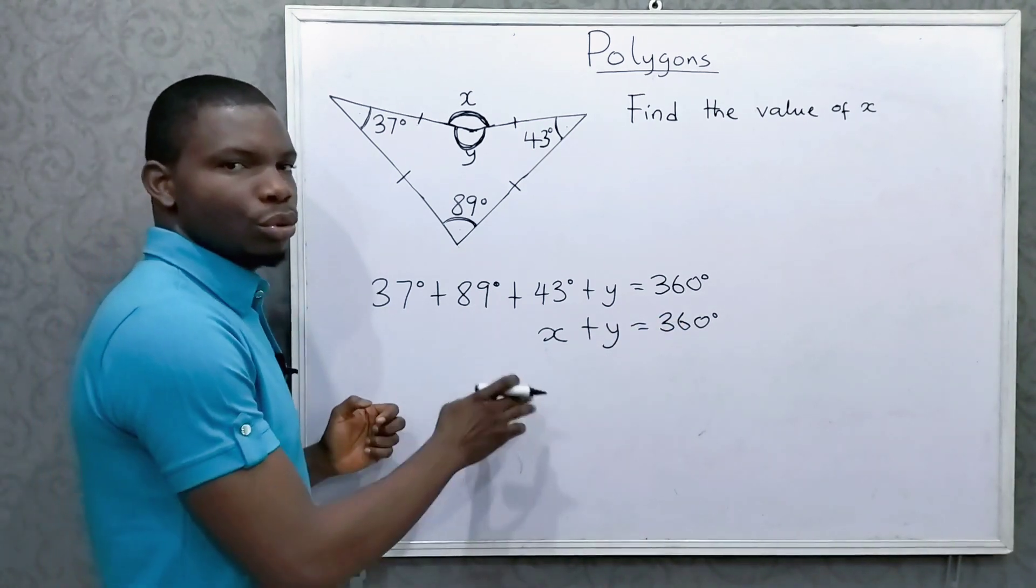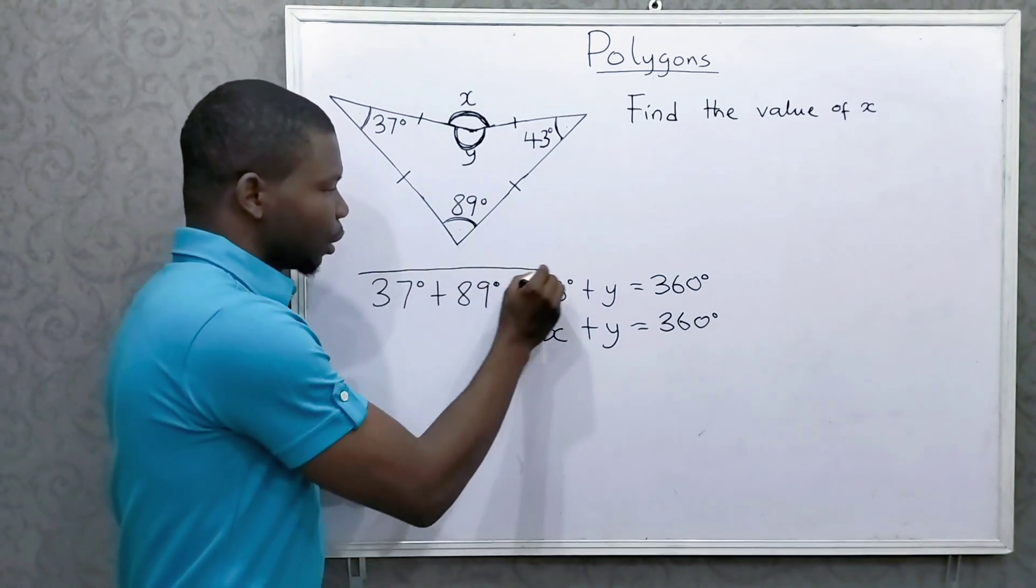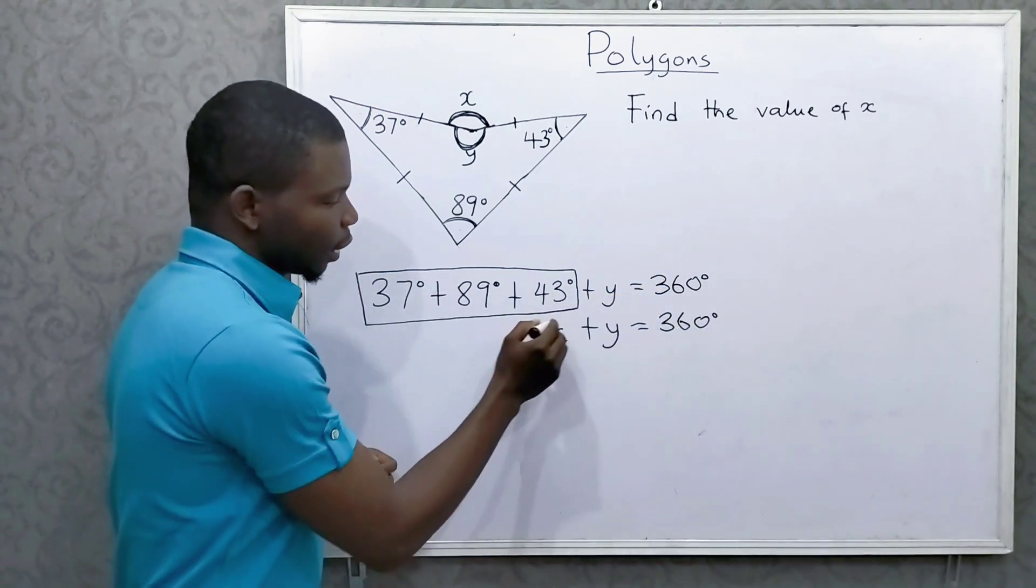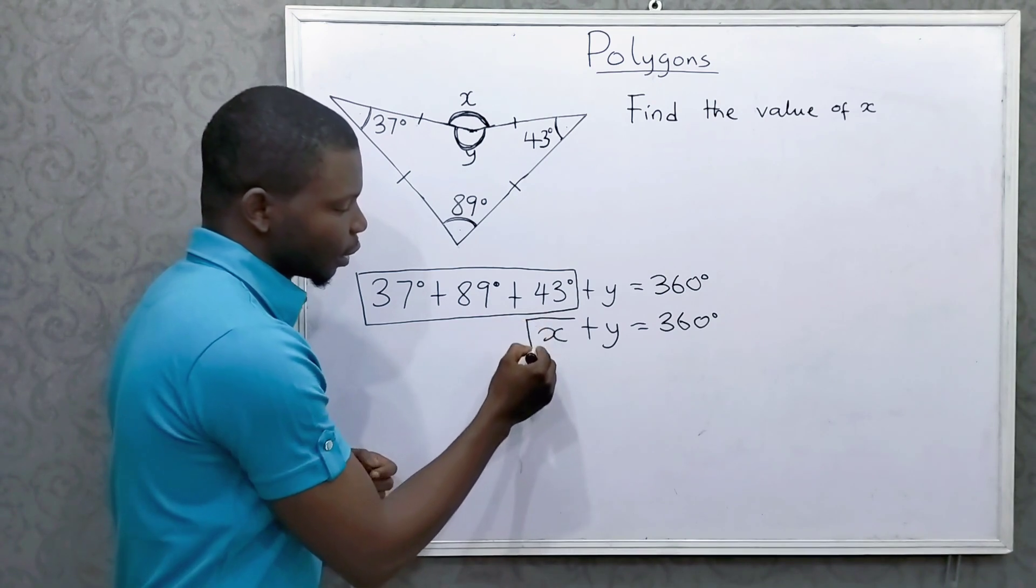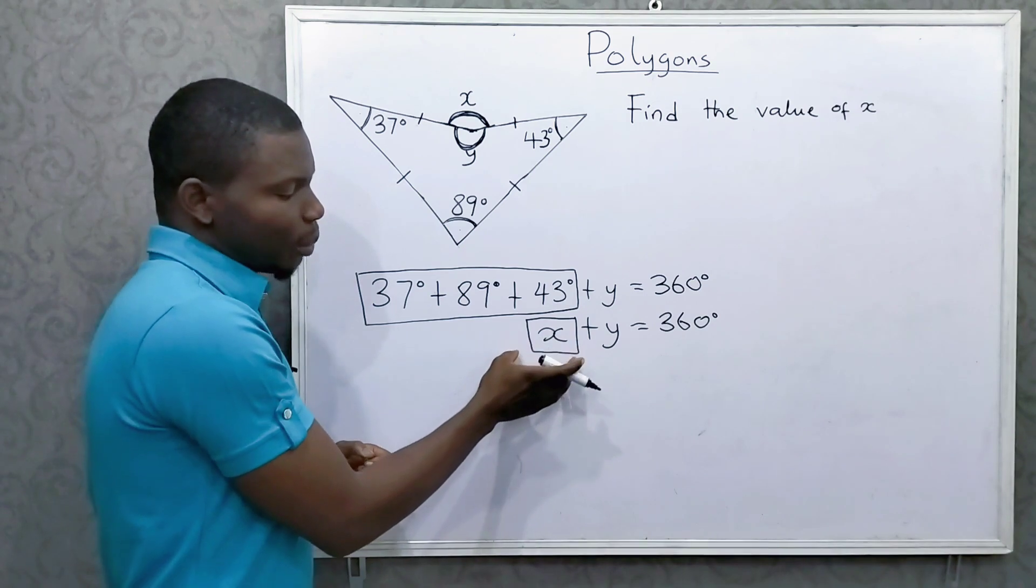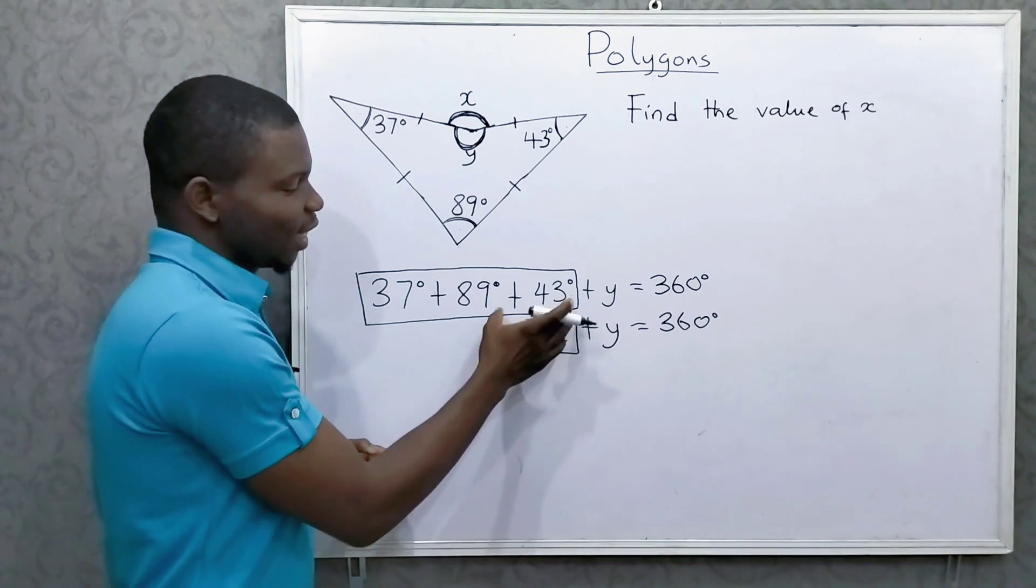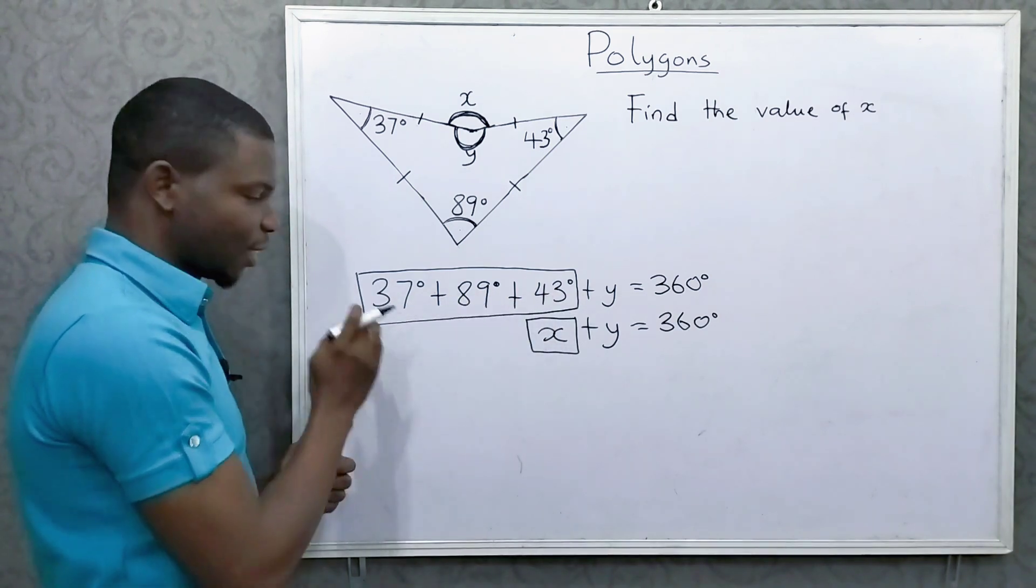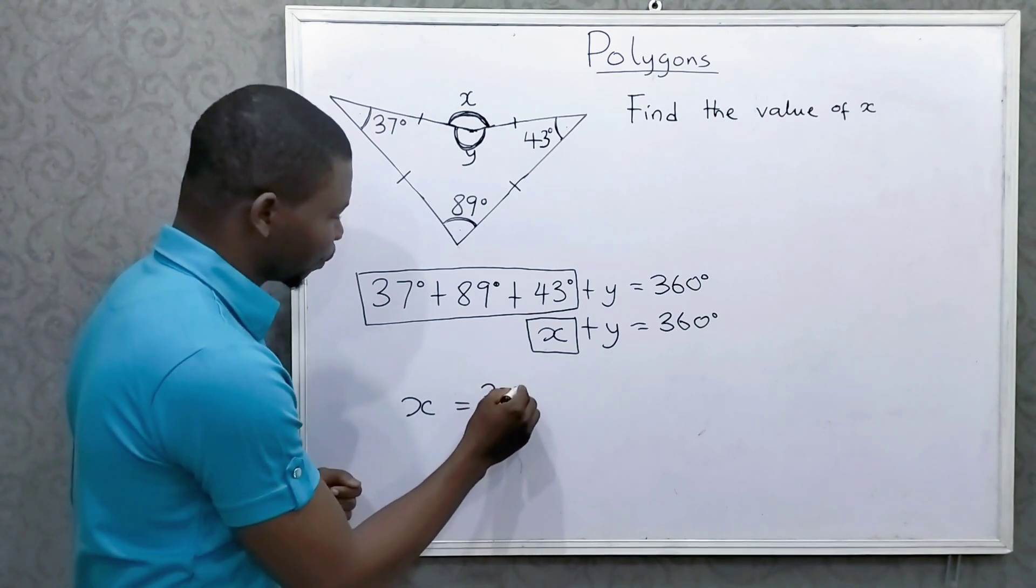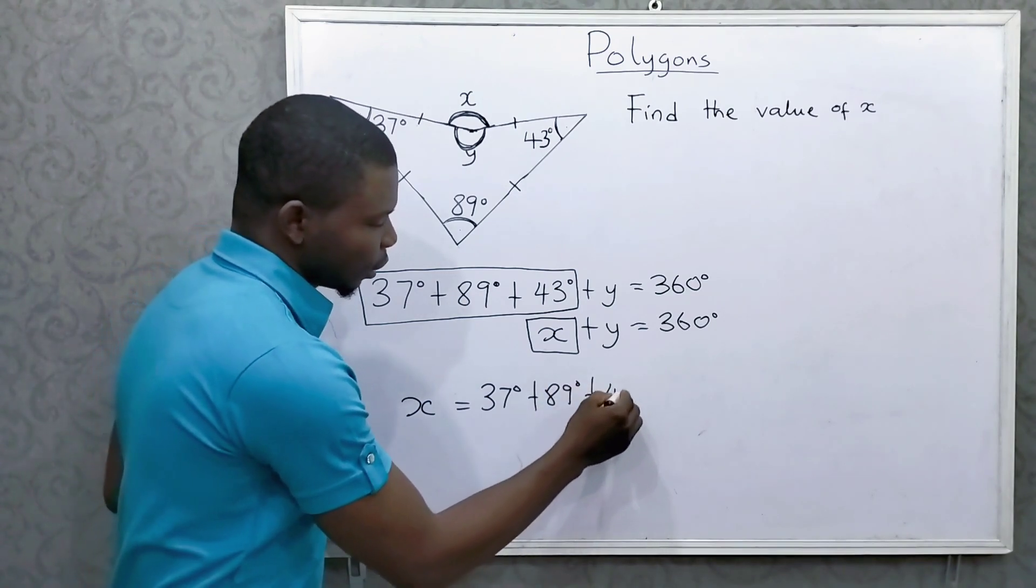Now, comparing the two equations, the first one, when you added all this to y, you got 360, right? And the second one, when you add x to y, you got 360. What does that tell you about x? You get the idea, right? So x should be equal to all of these. So we can simply say that x is equal to 37 plus 89 plus 43.